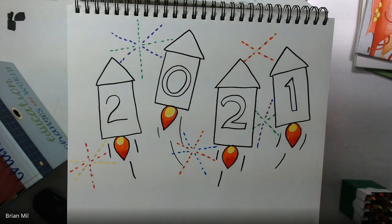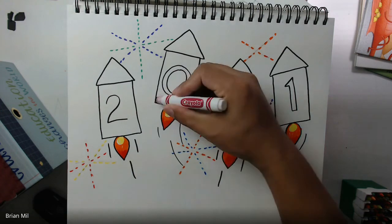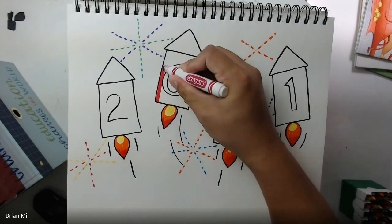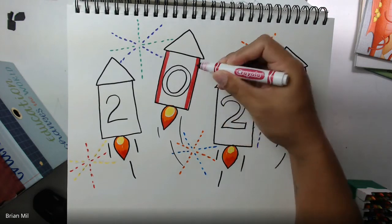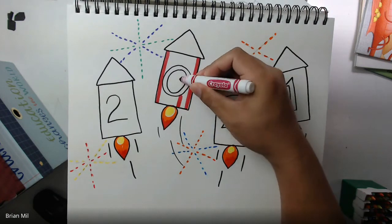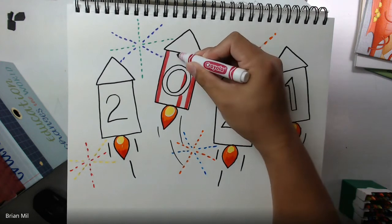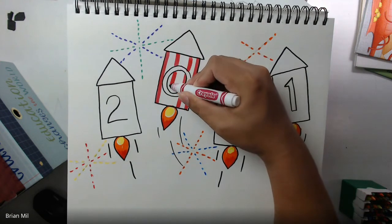Alright, for decorating the rockets you could have done anything you'd like. So if you wanted to add stripes like how I'm doing right now you can. If you want to add zigzags or wavy lines you could do that as well, any patterns you'd like. You can decorate your rockets any way you want.